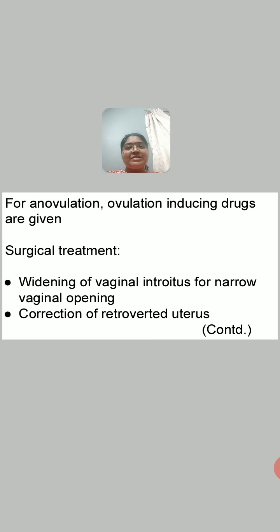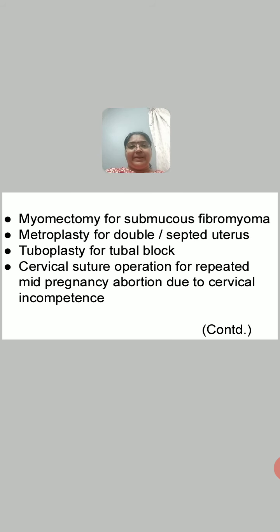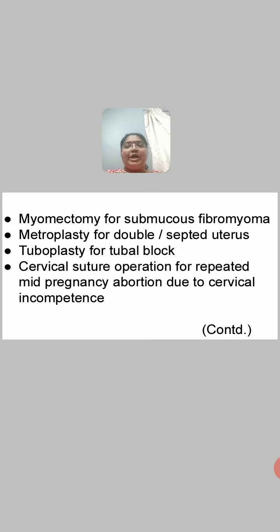Surgical treatments include: widening of vaginal introitus for narrow vaginal opening; correction of retroverted uterus; myomectomy for submucous fibromyoma; metroplasty for double or septate uterus — where in double uterus one uterus is removed and in septate uterus the septum is removed; salpingoplasty for tubal block; and cervical suture operation, also called Shirodkar's operation or McDonald's operation, for repeated mid-pregnancy abortion.